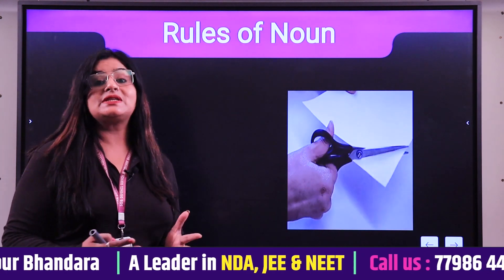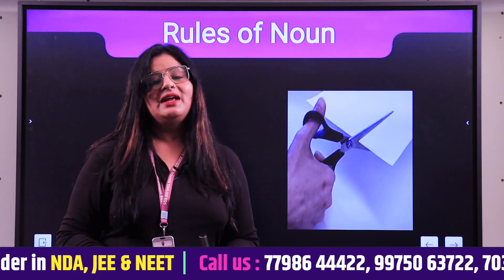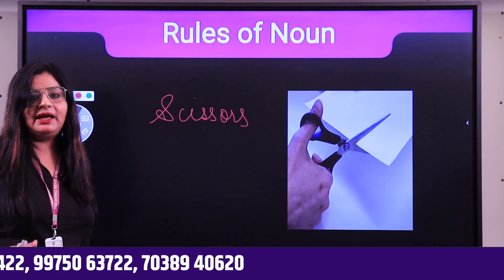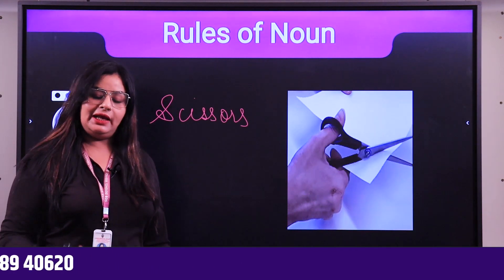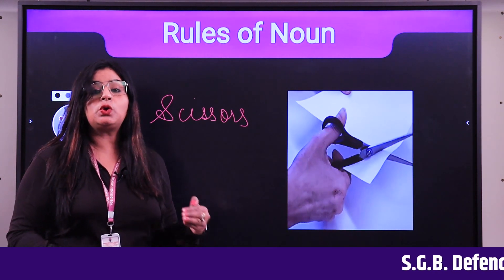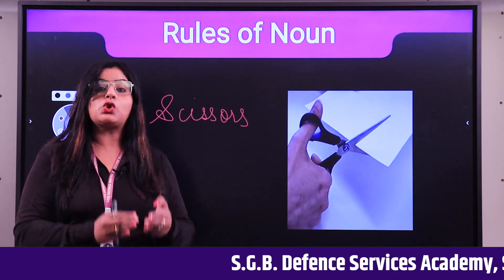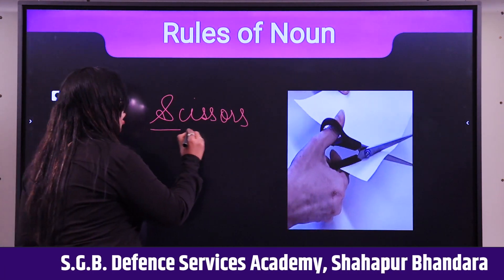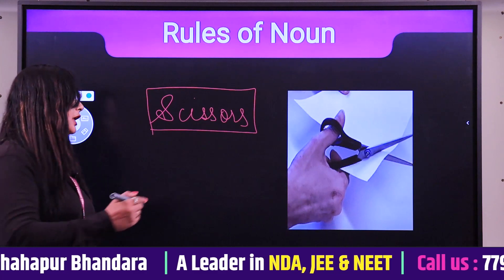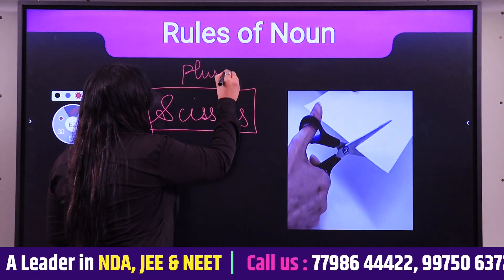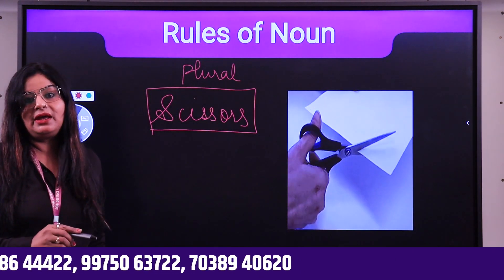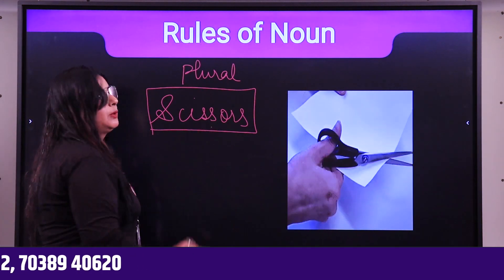Next on screen: scissors. A pair of scissors may look like one object, but it cuts only when both blades work together. Scissors always involves two blades joined, so it is always counted as plural — always in the two-count category. Even though a pair of scissors is one item, because two parts join to form it, we treat it as a plural noun.